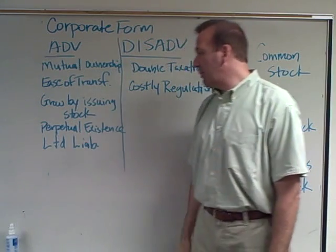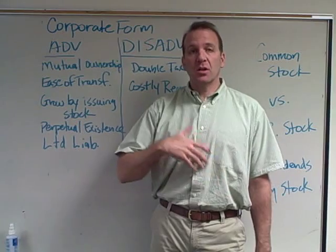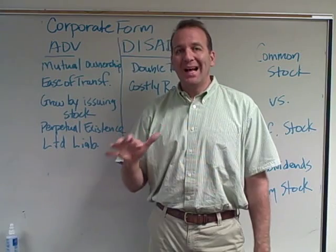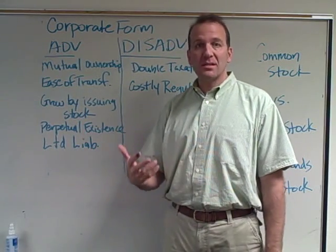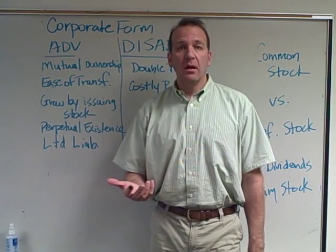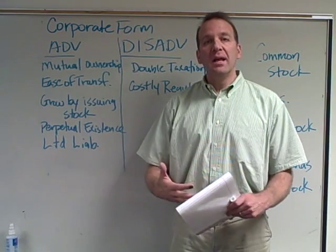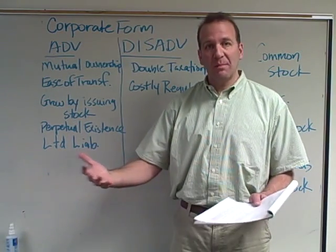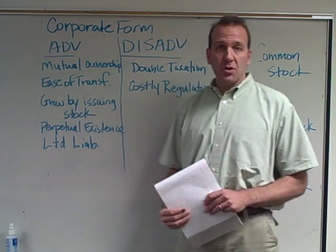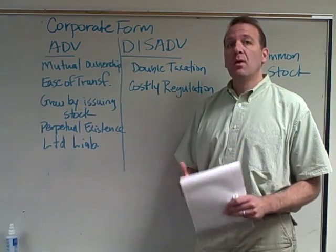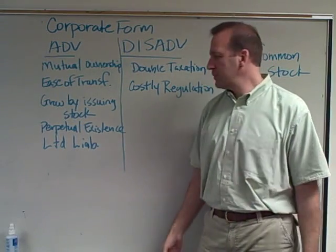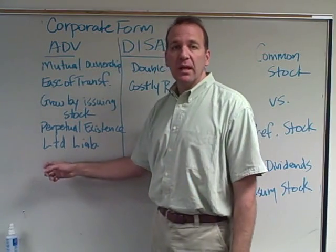Another advantage is perpetual existence, meaning the corporation doesn't close its books if somebody passes away or something changes within the corporation. With a sole proprietorship, if the owner passes away the business closes — he may leave it to his son, but now it's the son who is the owner, so it's really a new business. Same thing with a partnership — if one partner leaves or passes away, that partnership is terminated and a new one forms.